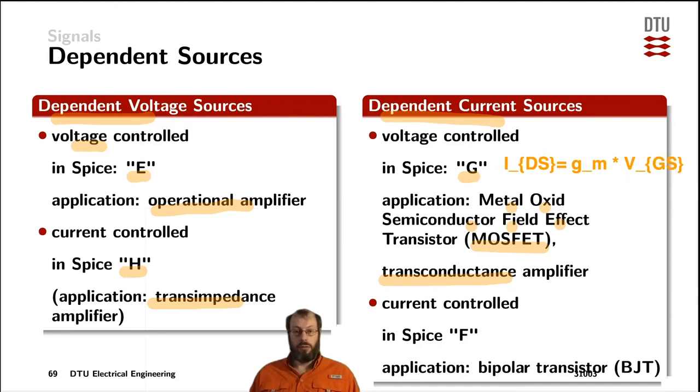Current controlled current sources are in SPICE represented by the letter F. And a typical application of that is bipolar transistor, a bipolar junction transistor, that's what the BJT stands for here. And the equation for a bipolar transistor is defined as the collector emitter current being controlled by a factor beta, the current gain, times the base current of that exact same transistor.